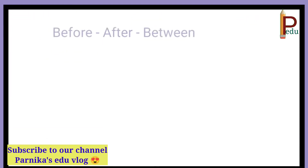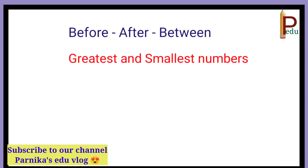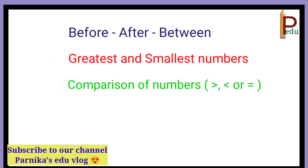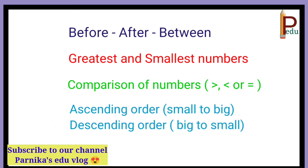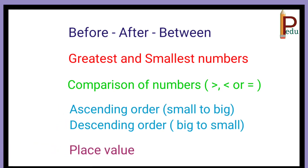Additionally, we will find Before, After, and Between Numbers. Greatest and smallest numbers, comparison of numbers, Ascending and Descending Order, and Arrangement and Place Value — all of these will be revised. This is about the first chapter.